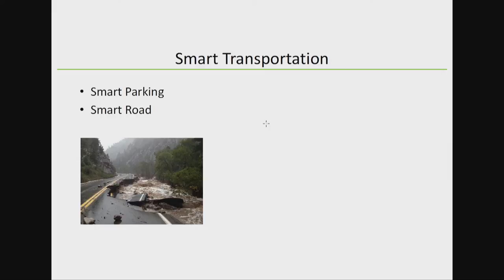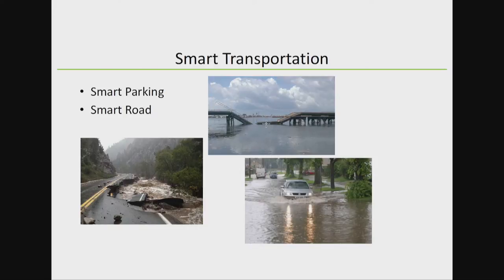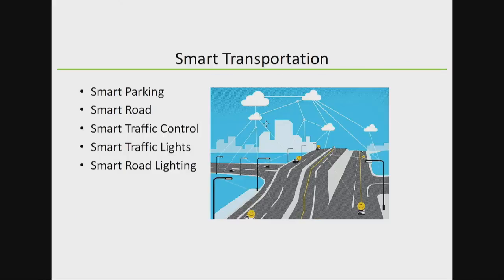We also have smart roads. Weather conditions and road damage at different locations can be detected by a smart road system, as well as bridges and flood detection. Flood detection is one of the challenges the Dublin government is trying to push and get researchers involved in. Smart traffic light control and road lighting working together will make traffic flow better, increase fuel efficiency, and highly reduce time spent in traffic.